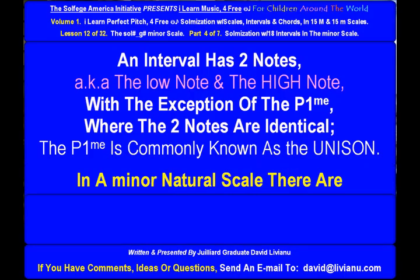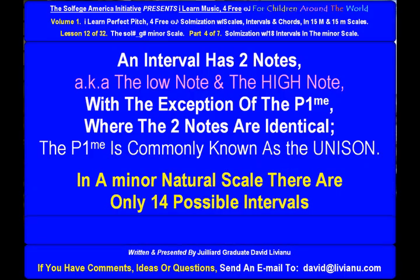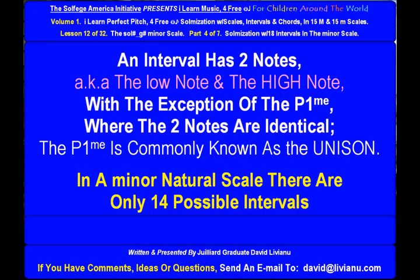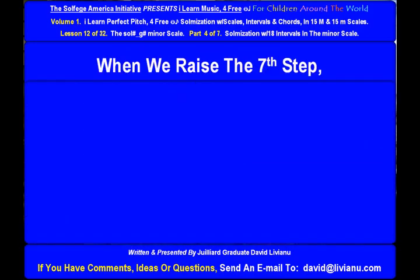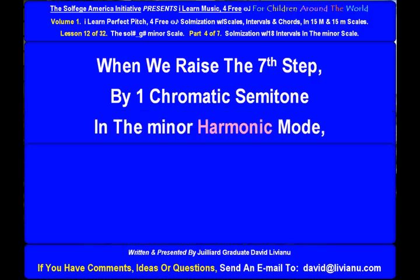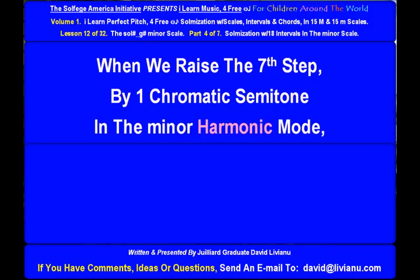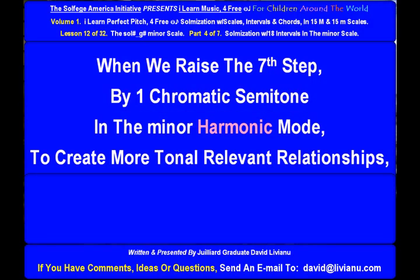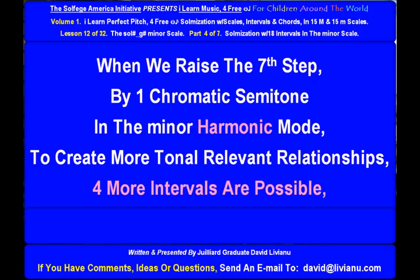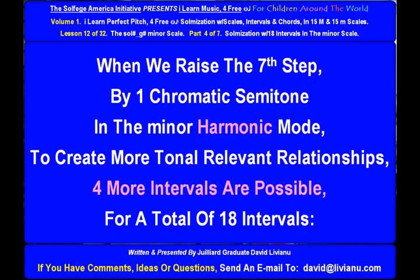In a minor natural scale, there are only 14 possible intervals when combining the seven notes of this scale. When we raise the seventh step by one chromatic semitone in the minor harmonic mode to create more tonal relevant relationships, four more intervals are possible, for a total of 18 intervals.